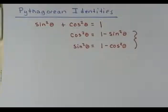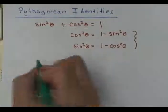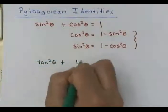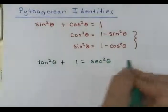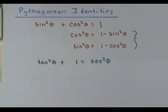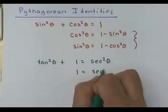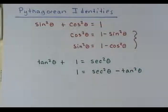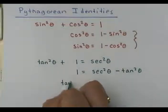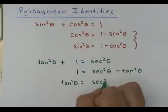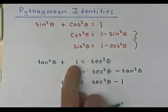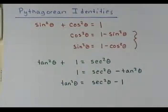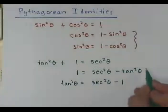The next Pythagorean identity is tangent squared theta plus 1 equals secant squared theta. An alternate form is 1 equals secant squared theta minus tangent squared theta. Tangent squared theta would equal secant squared theta minus 1 — you just bring the 1 over. These are alternate forms you'll see a lot.